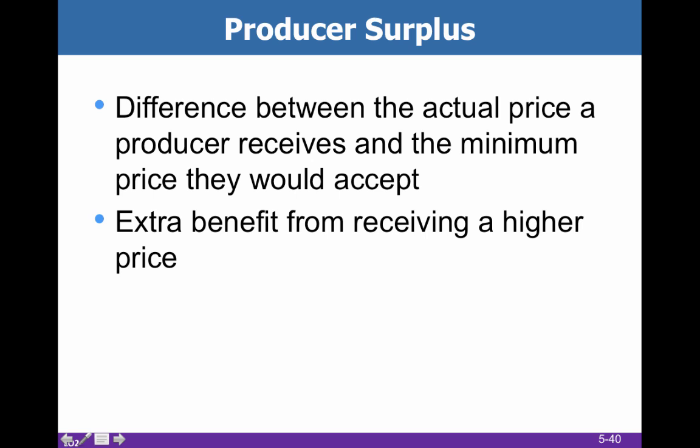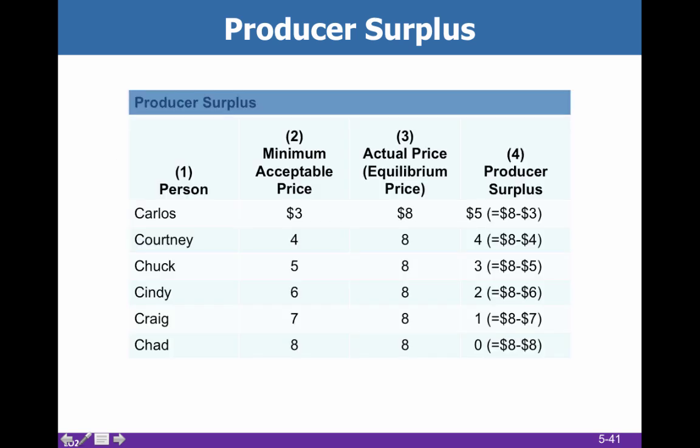Producer surplus, oppositely, is the difference between the actual price a producer receives and what they would be willing to accept — the extra benefit they get from receiving a higher price than they'd necessarily accept. Carlos is willing to sell for $3, but he gets to sell for $8, so he has $5 of producer surplus.